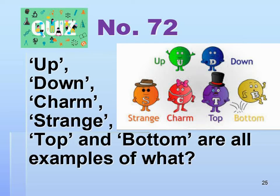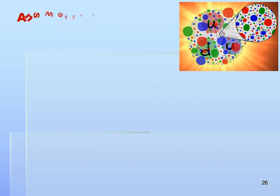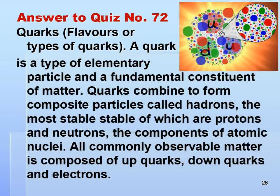Number 72. Up, down, charm, strange, top, and bottom are all examples of what? Answer: They are the flavors, or types, of quarks.